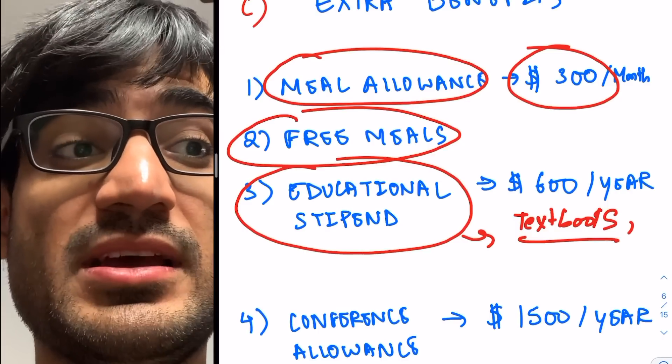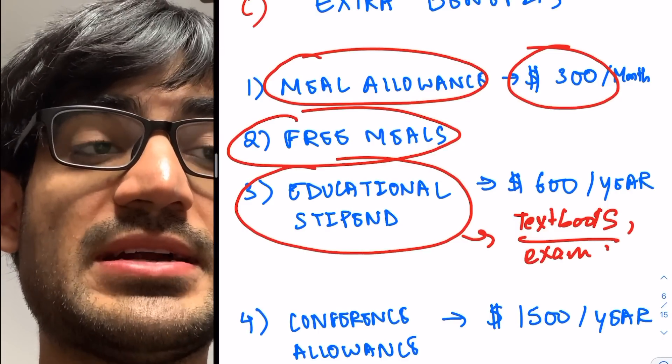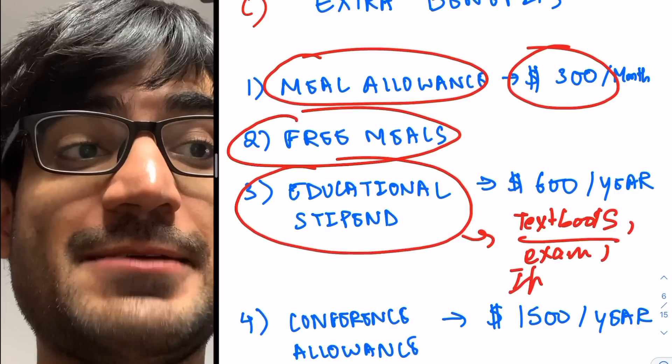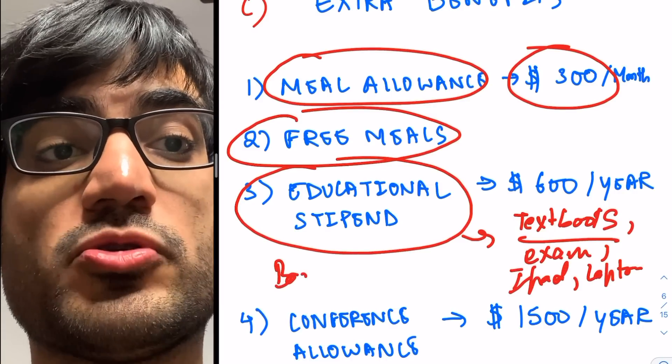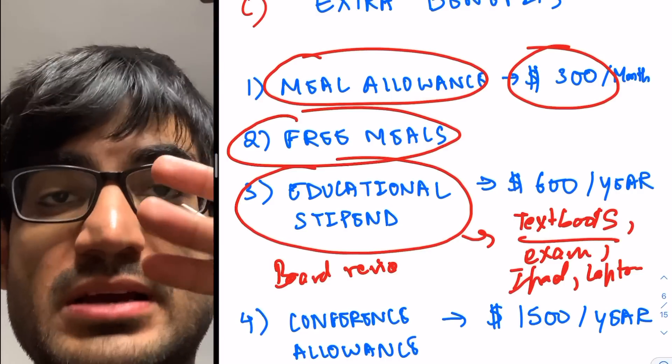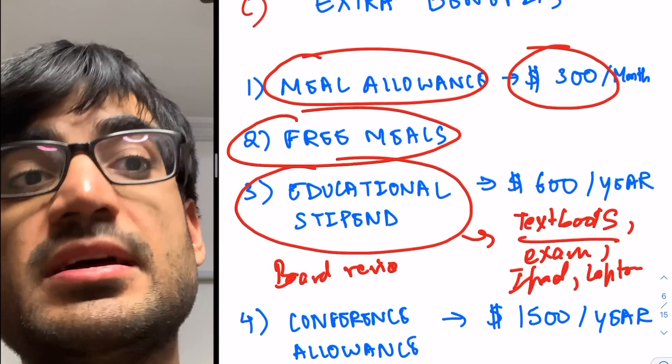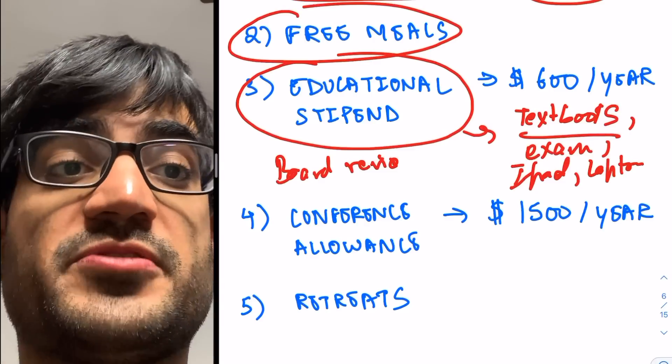You can also get money for, let's say you want to give step three. So you can get money for that. Or maybe you want to buy an iPad or maybe a laptop or maybe a course, like a board review course for your residency. So you'll be given up to $600 per year to spend on these things.